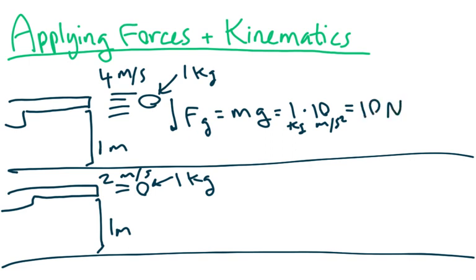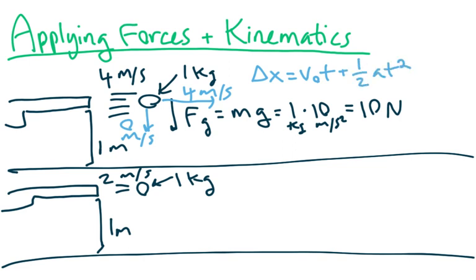I really didn't have to do all that, because what I want to work with is the acceleration. Even though the bullet is going four meters per second horizontally, it's not going any speed vertically — so that's zero meters per second. Since we're concerned about when it hits the ground, which is vertical, we look at the vertical component. Going back to our kinematics equations, we use: delta x equals v-zero t plus one-half a t-squared. We know delta x is one meter and v-zero is zero meters per second.